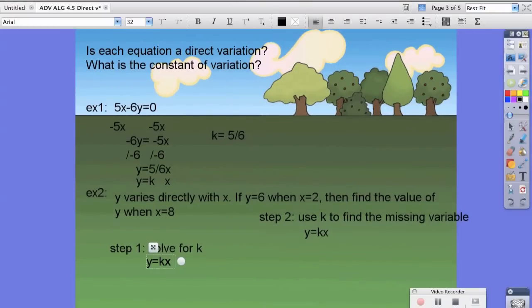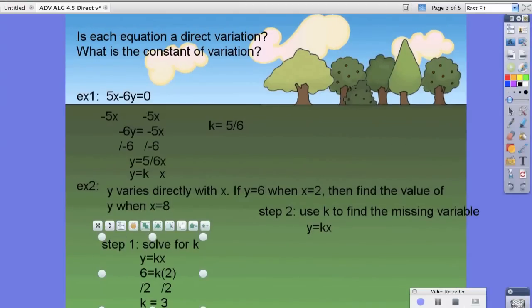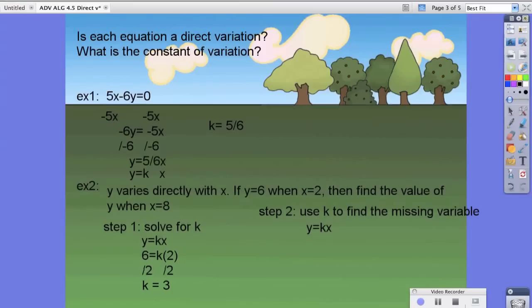Now, because y equals kx, and in the first part of the equation, it says y equals 6 when x equals 2. We're going to substitute those values in. So, y was 6, x was 2. We're going to substitute that. And then to isolate the k, we're going to divide 2 to both sides. We're going to find that k is equal to 3. So now we've solved for k, which was relatively easy, I think.